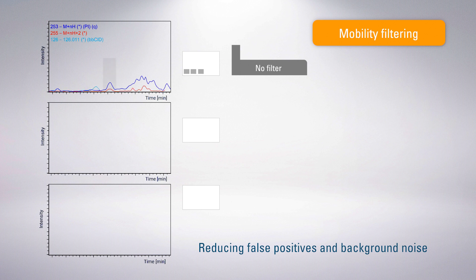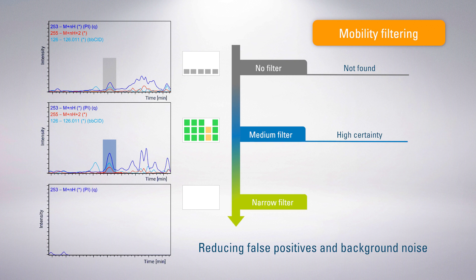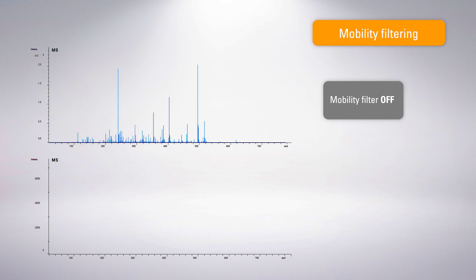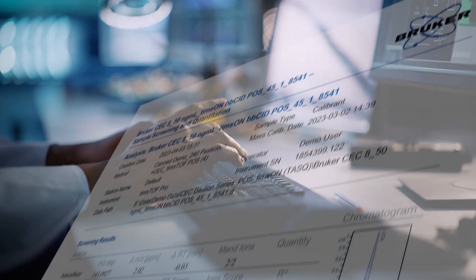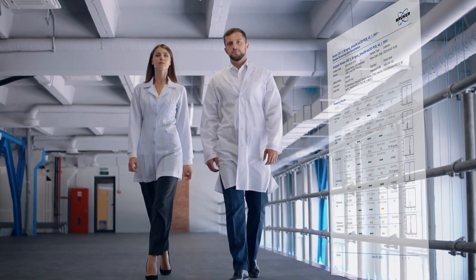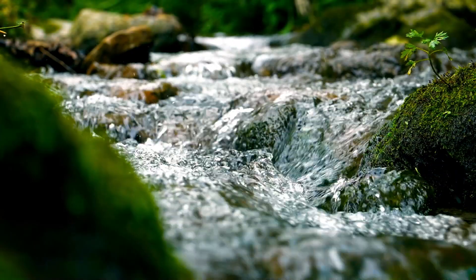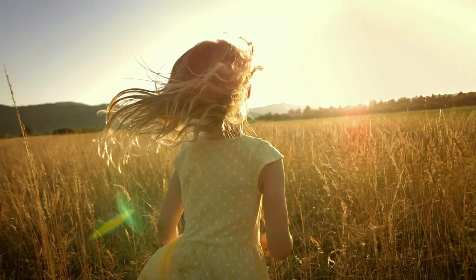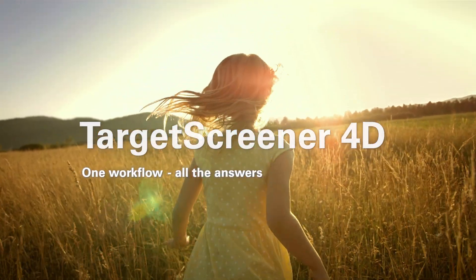Enhancing sensitivity and match accuracy, mobility filtering eliminates interferences from matrices, reducing false positives. Mobility filtering efficiently and effectively cleans up spectra. Target Screener 4D — from sample to report in a few simple steps. One workflow. All the answers.